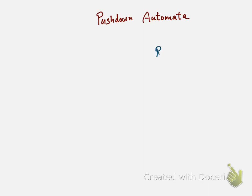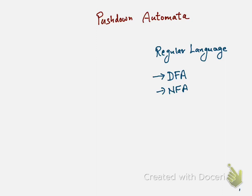Till now we have looked at finite state automata. In this lecture we are starting with a new type of machine called pushdown automata. Before starting, let's recap: finite state automata dealt with regular languages. If we are given a regular language, we can make a deterministic finite automata for it. We have seen that DFAs and NFAs are equivalent — you could convert any NFA to a DFA.